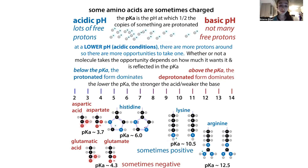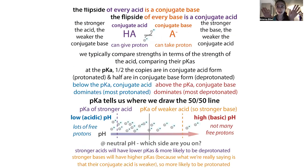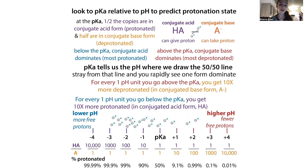Different proteins have different points at which they tip the scale — where the balance of positive and negative parts results in overall neutrality. We call this the isoelectric point, or PI. PI is the pH at which the protein is neutral overall. If the pH is below the PI, the protein is going to have a net positive charge. If the pH is above the PI, the protein is going to be overall negatively charged. Different proteins have different PIs, so at the same pH they'll have different charges.